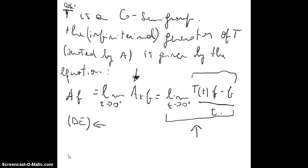First of all, let's review some things. The way to compute the generator of a semigroup is by taking the limit as t goes to 0 plus of T(t)f minus f over t. So we will start doing that — it is somehow the same as what we did for lambda, but let's do it again.